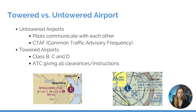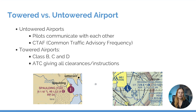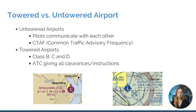As you can see in our example here, the airport depicted on the left-hand side is in magenta, which means that it is an untowered airport. The frequency is identified by a solid circle with a C in the middle of it. This magenta C is following the frequency 122.9, which means that the CTAF frequency is 122.9.